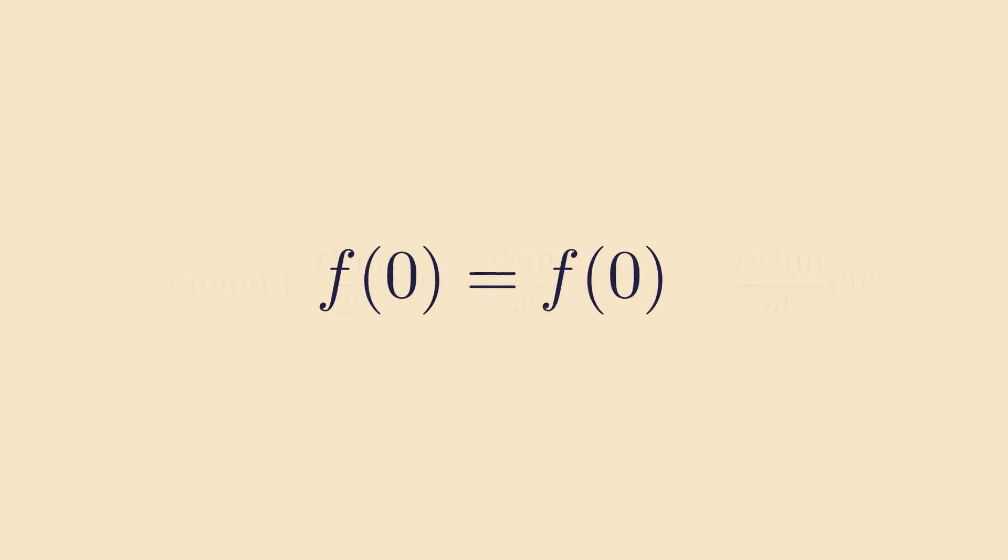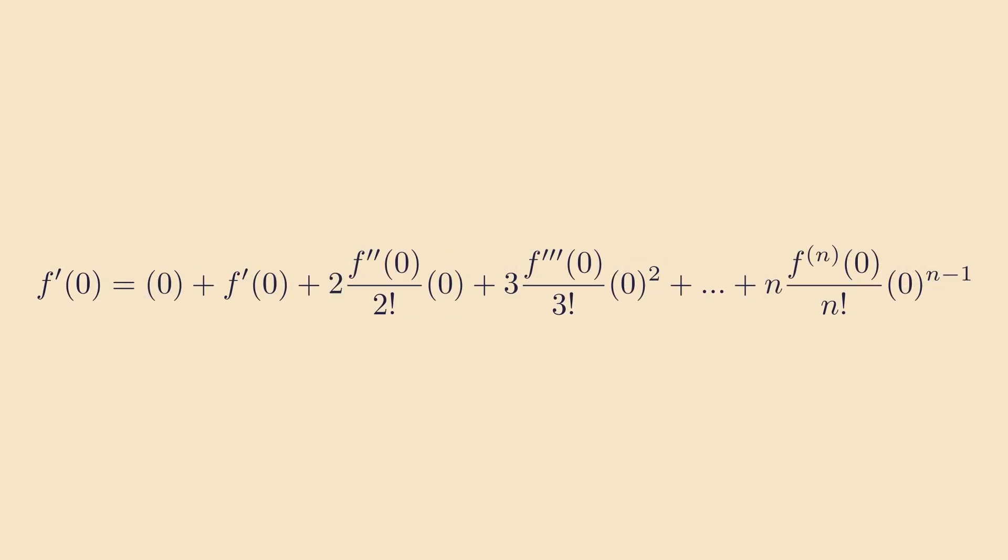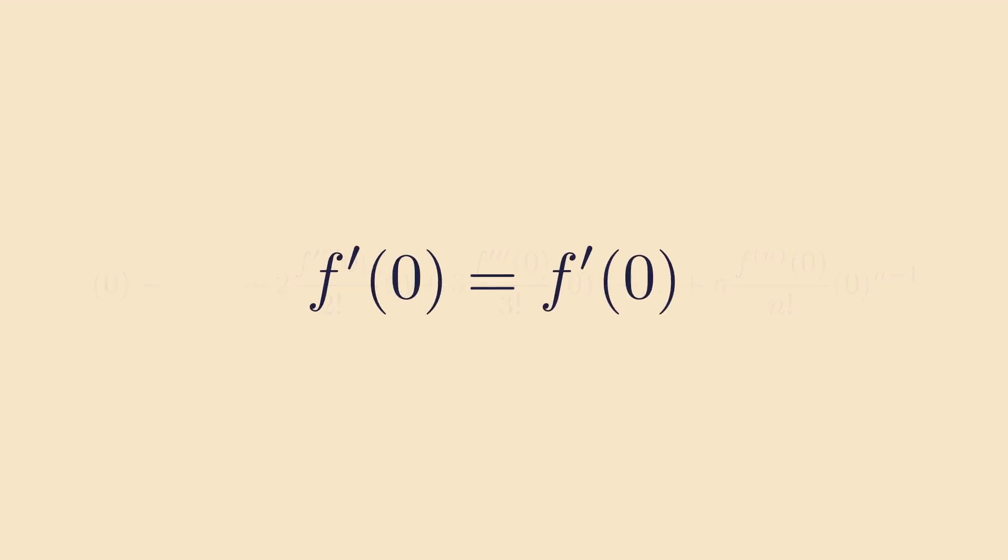When we take the 0-th derivative, we get f(0) equals f(0). And when we take the first derivative, we get f'(0) equals f'(0). So the slope of the function matches.